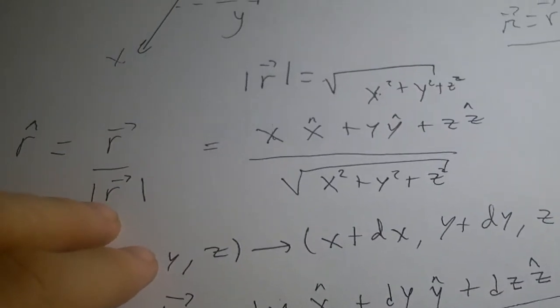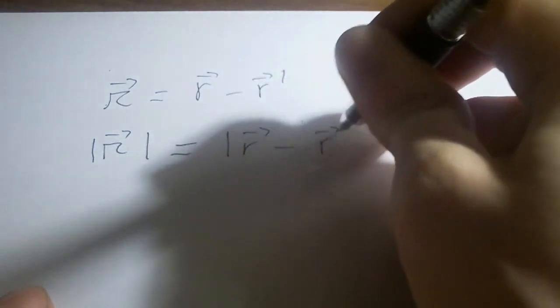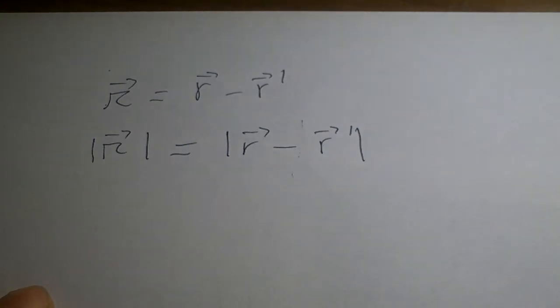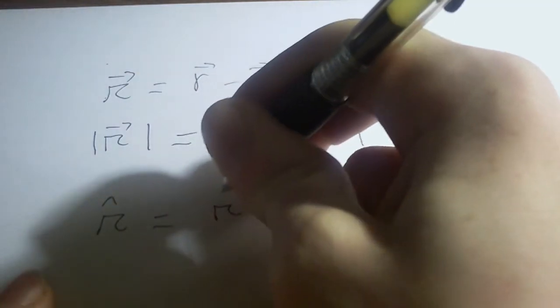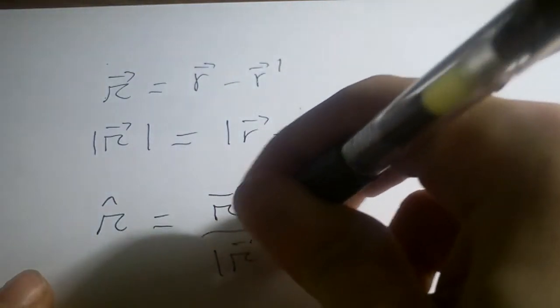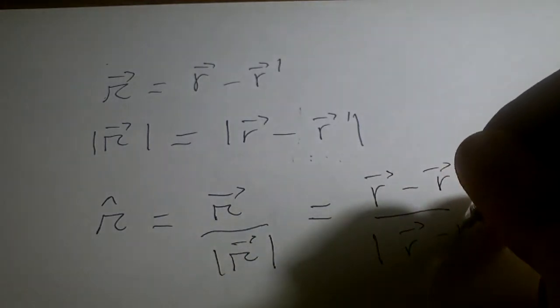Now let's talk about the magnitude of the separation vector, which is between the field point and the source point. Rewriting the separation vector: script r is r minus r prime. Its magnitude is the magnitude of r minus r prime. And the unit vector in the direction from r prime to r is that vector over its own length, which is r minus r prime over the magnitude of r minus r prime.